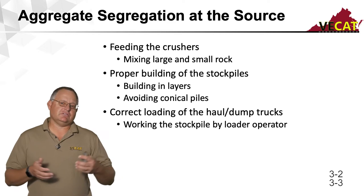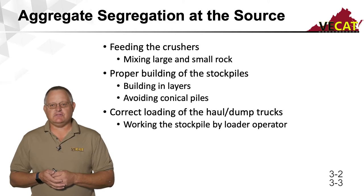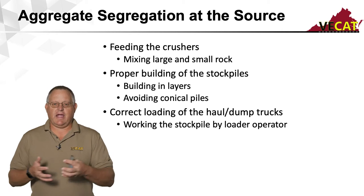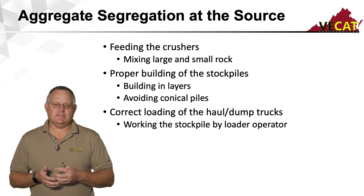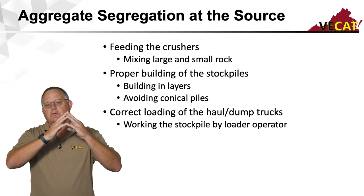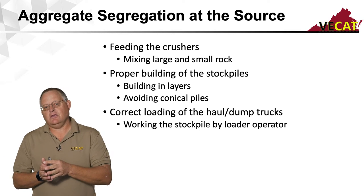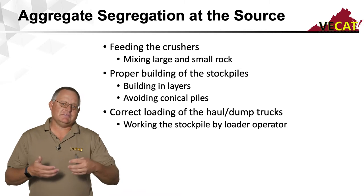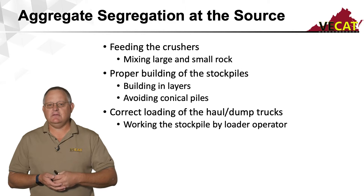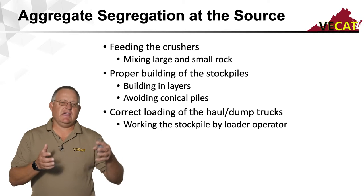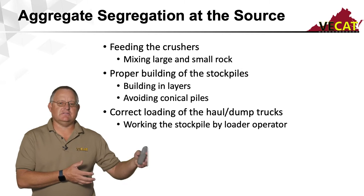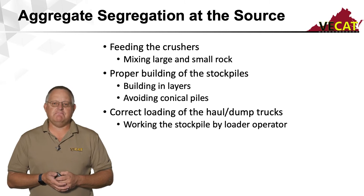At the quarry source, it's how those crushers are fed — how we're mixing large and small rock to get a good blend as they go through the crushers. How we're building the stockpiles in layers matters. We don't want conical stockpiles because if you drop all the material on a cone, the larger material rolls to the bottom. So your large and small materials segregate. A loader operator then scoops mostly coarse material from the bottom, and we get segregation all the way back at the source.